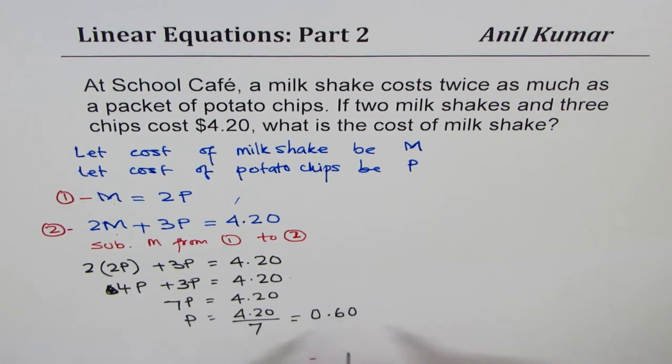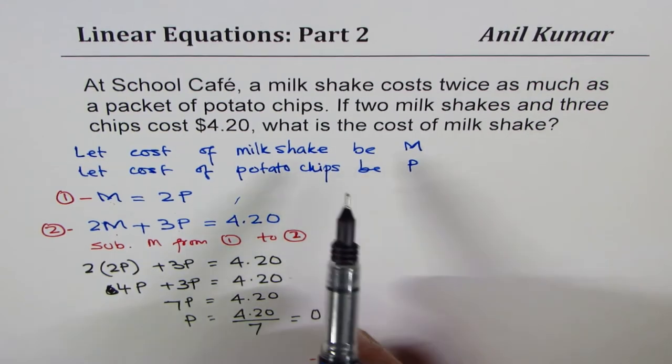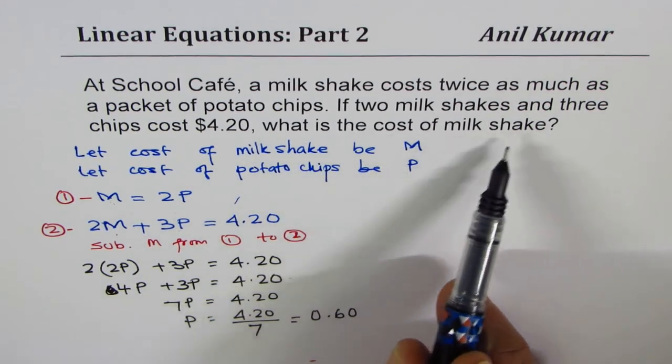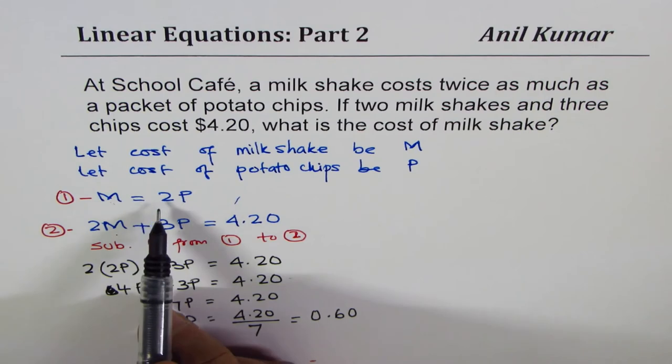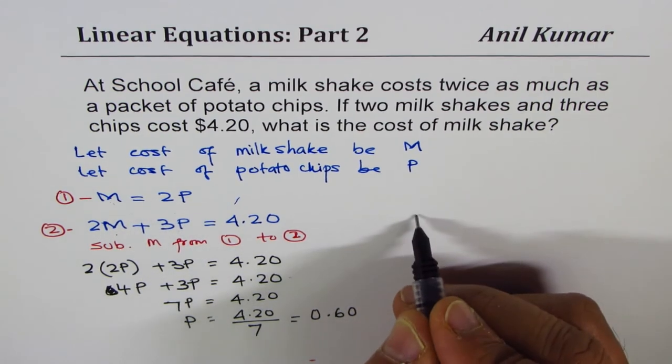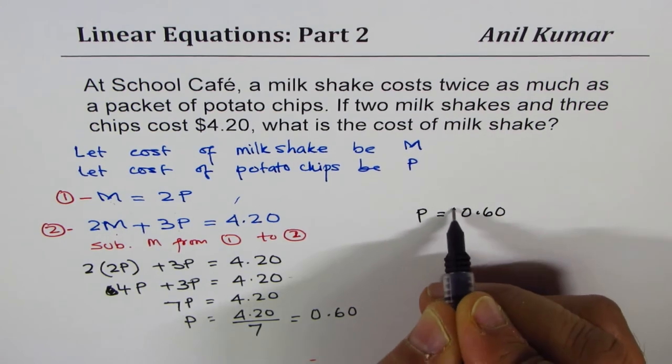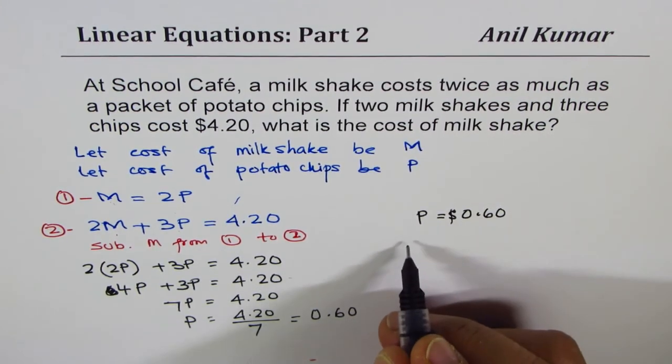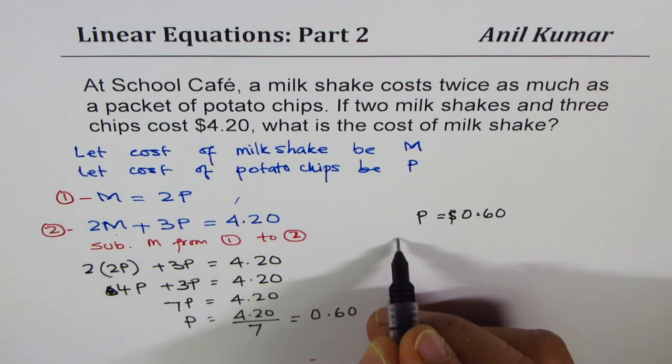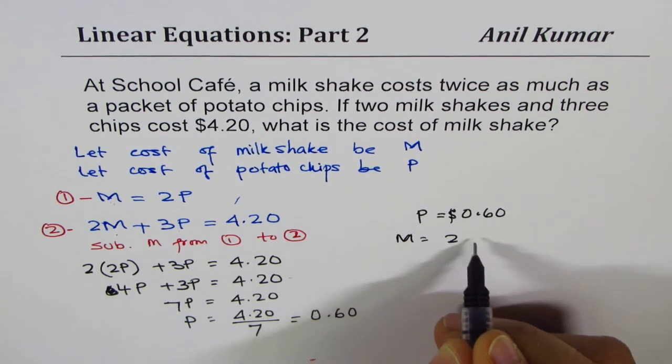What do we need to find? The cost of milkshake. Milkshake is twice the cost of potato chips, so it will be 2 times 60 cents.